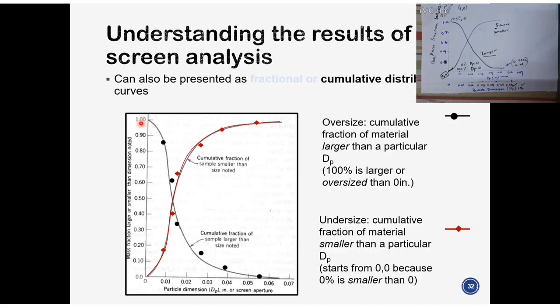Also, we talked about in class, that this cumulative mass fraction of material larger than a particular Dp has a shortcut name and that is called oversize. So oversize curve is this one. Undersize curve is this one. Undersize, meaning smaller, meaning S-curve.